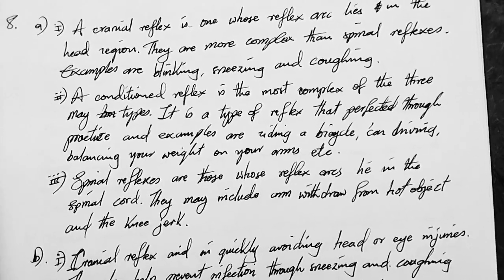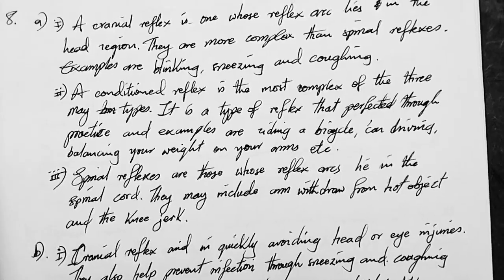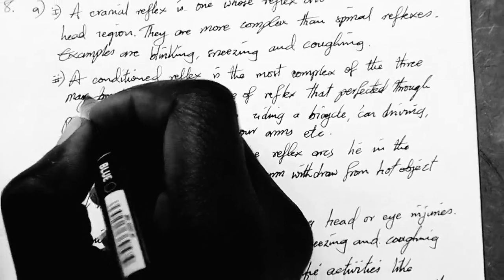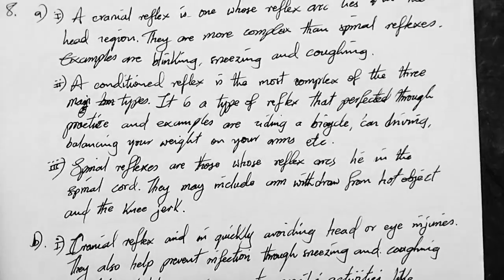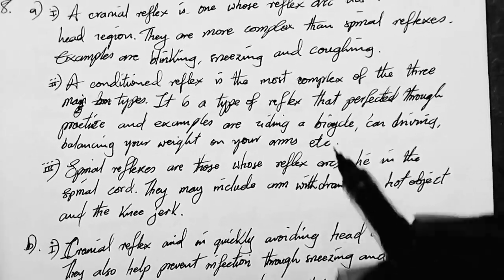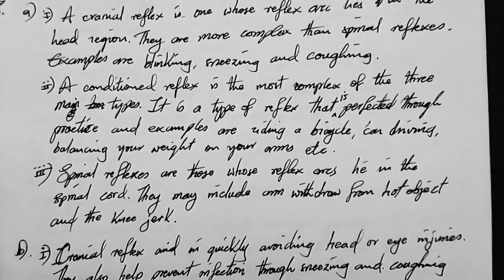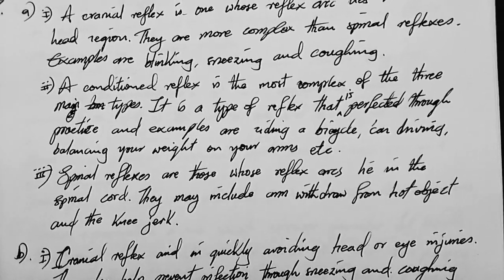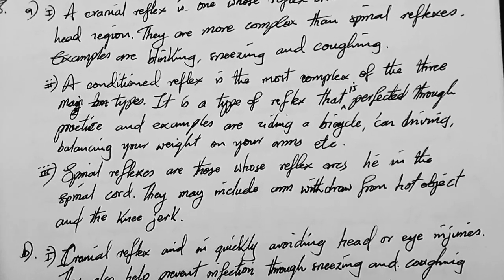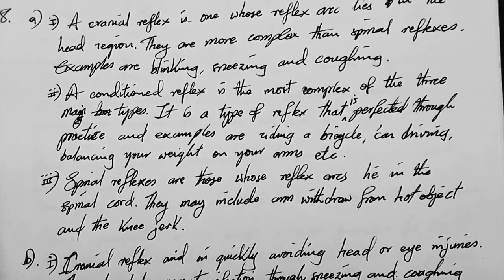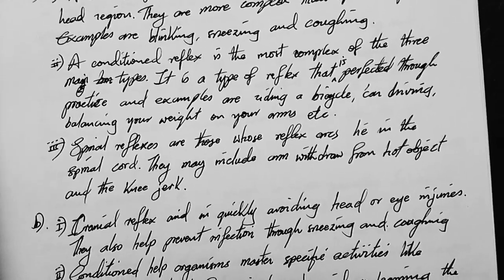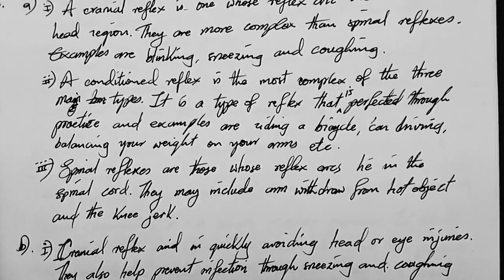A conditioned reflex is the most complex of the three main types. It is a type of reflex that is perfected through practice. Examples are riding a bicycle, car driving, and balancing your weight on your arms. When you overdo it, you stop thinking about it — you can easily flip, do somersaults, and such things.